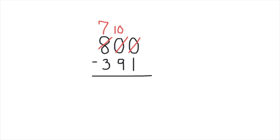So we're taking 1 away from our 10 to make it a 9, and then we're adding 10 to our 0 to make it a 10. Now we can subtract. 10 minus 1 is 9, 9 minus 9 is 0, and 7 minus 3 is 4, so our answer is 409.